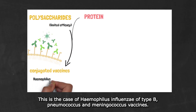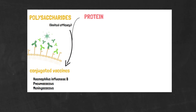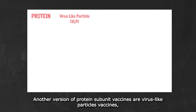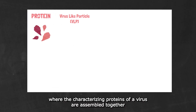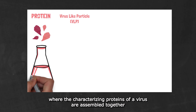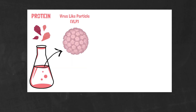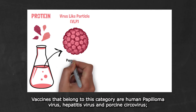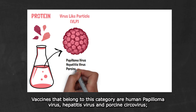This is the case of Haemophilus influenzae type B, pneumococcus and meningococcus vaccines. Another version of protein subunit vaccines are virus-like particle vaccines, where the characterizing proteins of a virus are assembled together forming a particle that looks like the virus but is totally harmless. Vaccines that belong to this category are human papillomavirus, hepatitis virus and porcine circovirus.